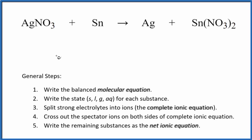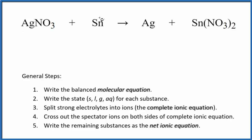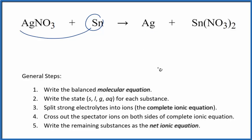In this video, we'll write the balanced net ionic equation for silver nitrate plus tin. We have a single displacement reaction where tin is displacing the silver, so the silver ends up by itself. To balance the net ionic equation, we first have to balance the molecular equation.